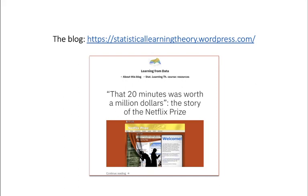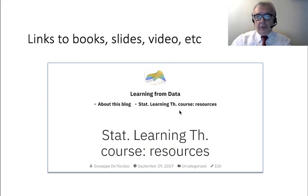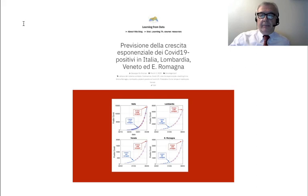In the Netflix Prize story, you will learn that 20 minutes decided a million-dollar prize — quite interesting. The two groups that arrived first and second differed only in that the winning group submitted their solution 20 minutes earlier. In the blog, under Resources, you can find links to books, slides, and videos — the main place for everything you need to attend the course.